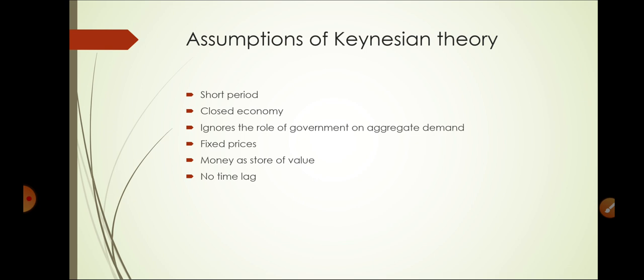Next, he also ignores the government's role on aggregate demand. He says that the government has no control on consumption and investment. Next is fixed prices — in an economy there are two prices, that is factor prices and product price, and these two prices come under aggregate supply.